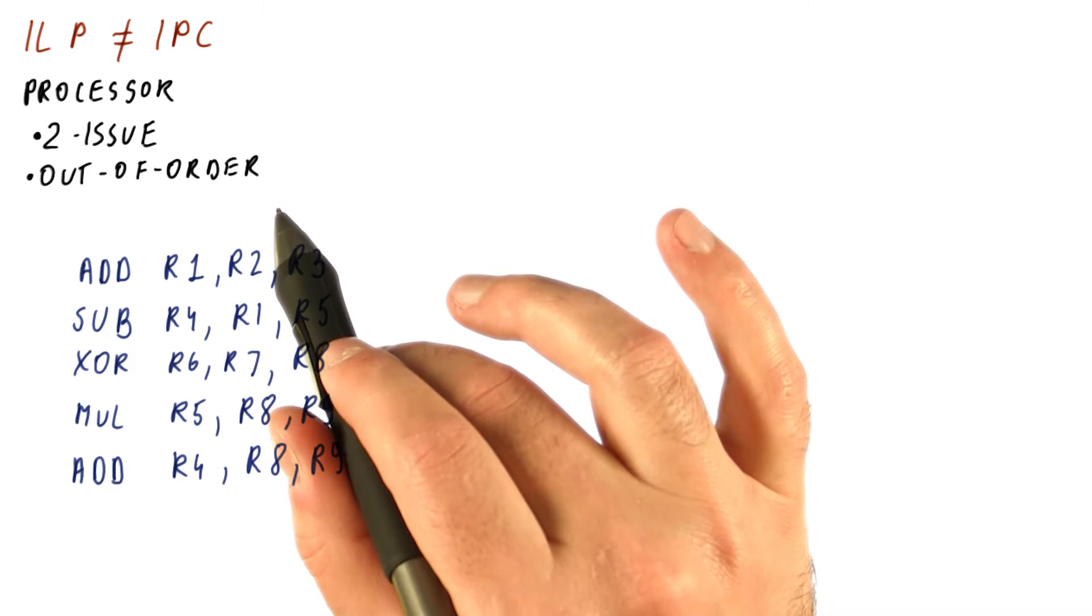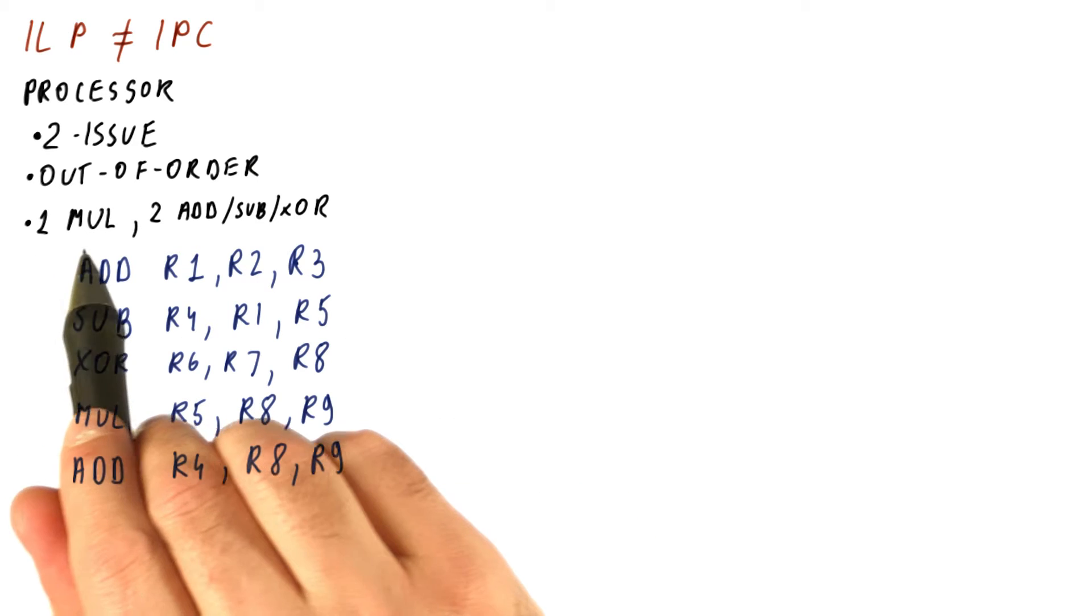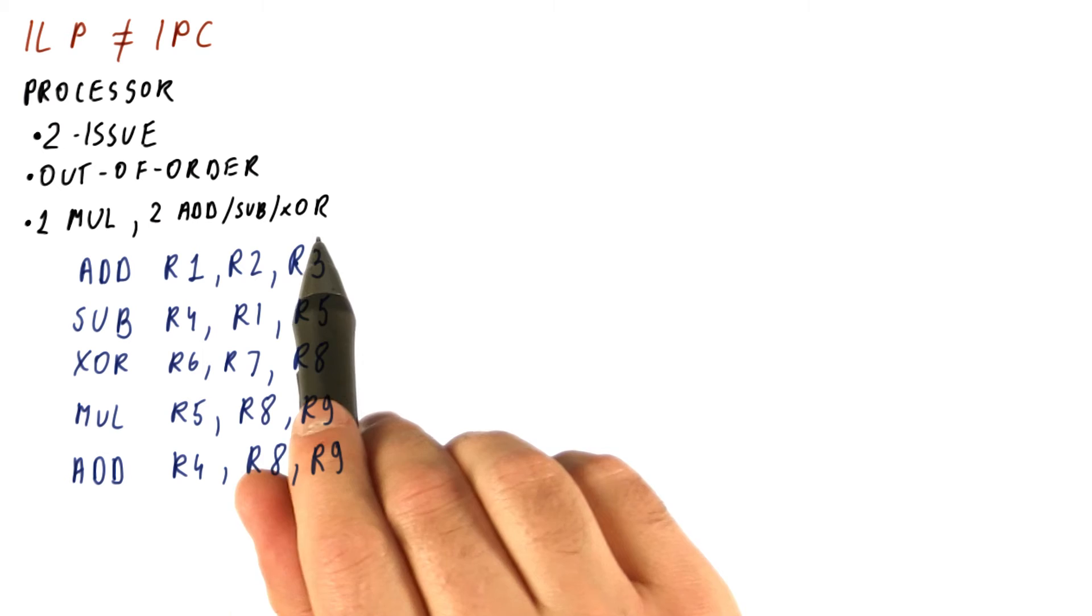And let's say that it only has one multiplication unit and two units that can do add, subtract, XORs, etc.